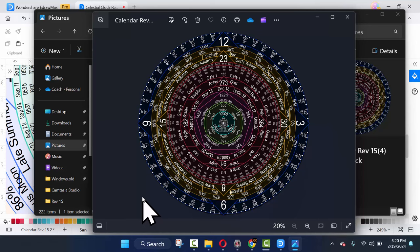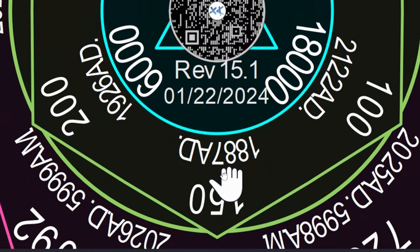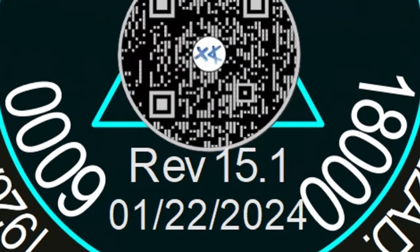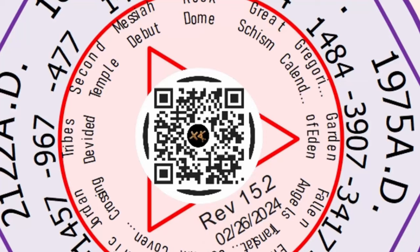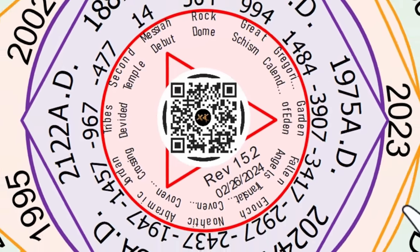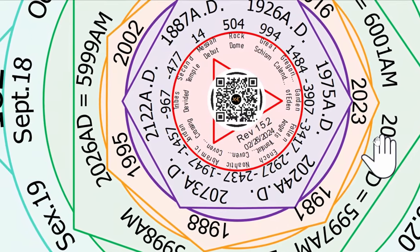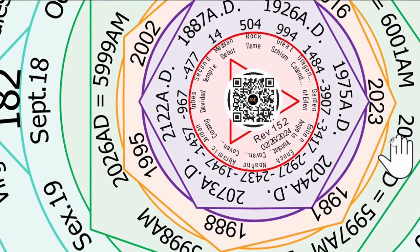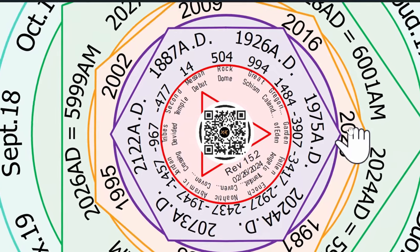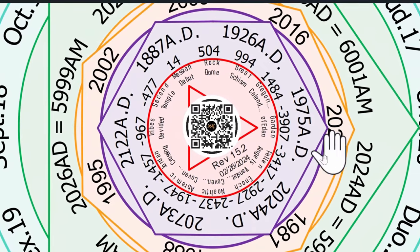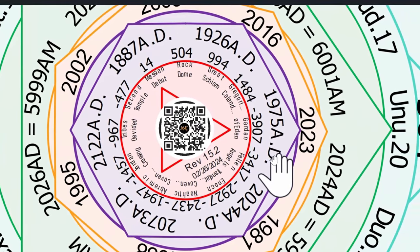This is the January 22nd revision. Looks like we're going to have to use Rev 15.2, which we plan to publish on or about February 26th. We had to update it here — it's a little bit different from the other one. We'll just look at this one because it shows 1975, 2023, 2024 at the start position.